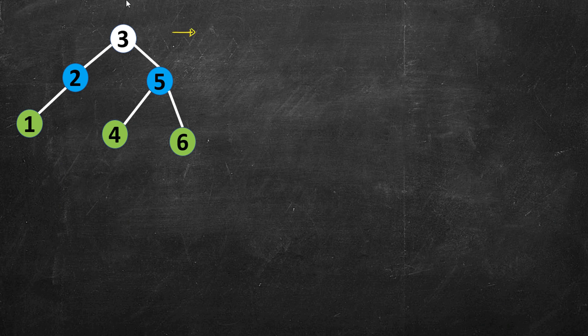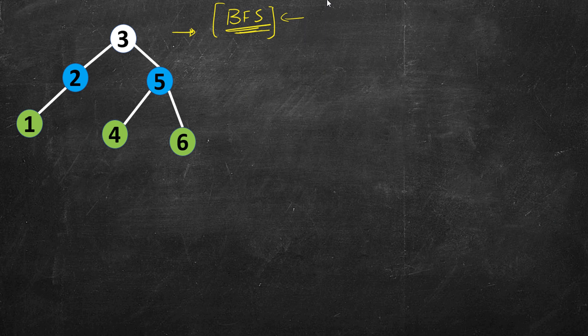The task is to print the level order traversal. If you have solved a few problems on graphs where you studied breadth first search, then you have already solved this problem. If you have watched any of my earlier lessons on graphs, you already know the concept. The key thing is that while writing the code you have to be careful. We are given the pointer to the root node.